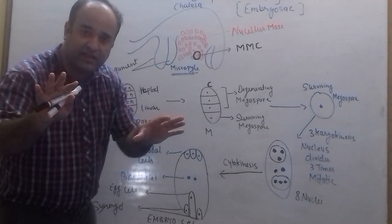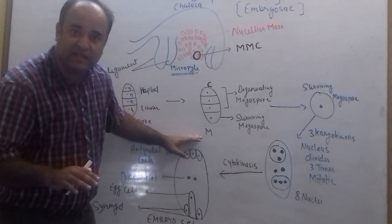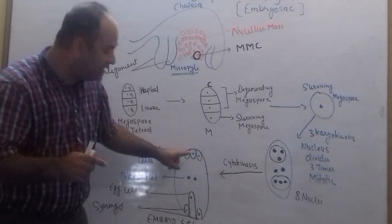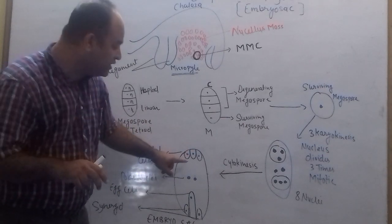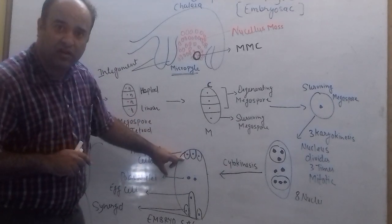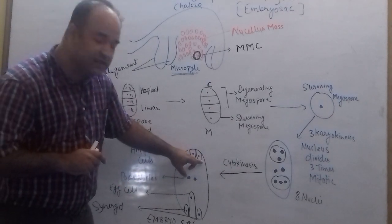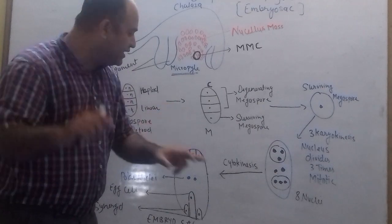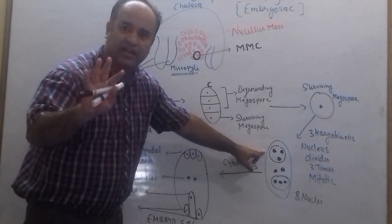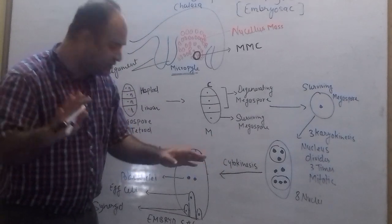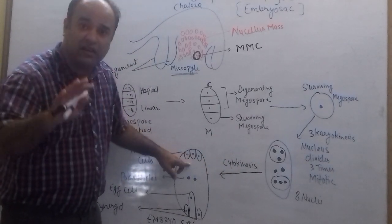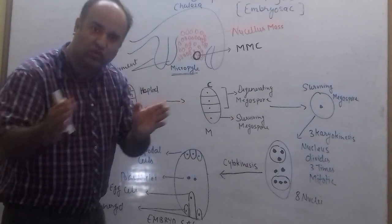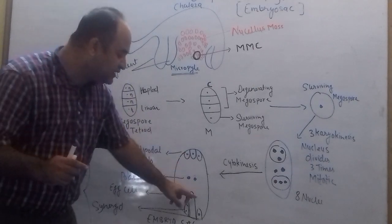Now cytokinesis will take place. Cytokinesis will occur in the upper cells — those towards the micropylar end — and a wall will form around these nuclei, forming cells one, two, three, four, five, six. After eight nuclei, cytokinesis means walls will be formed around the nuclei towards both the chalazal end and the micropylar end.